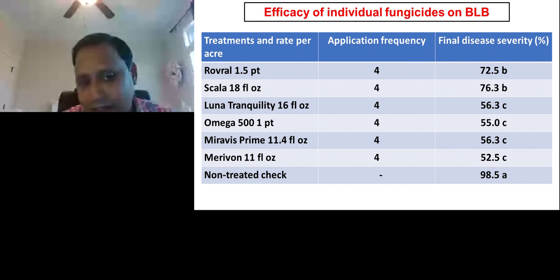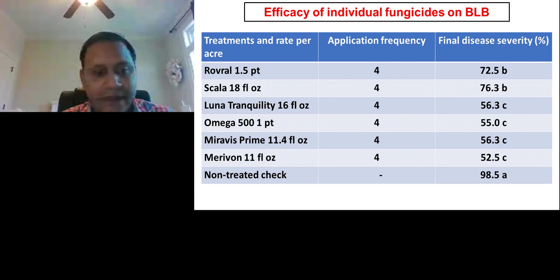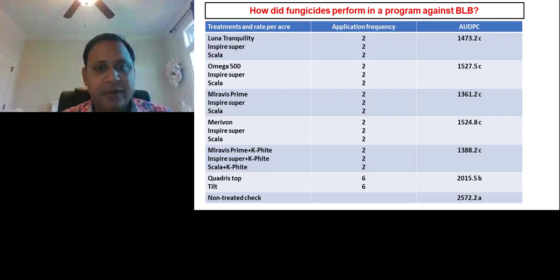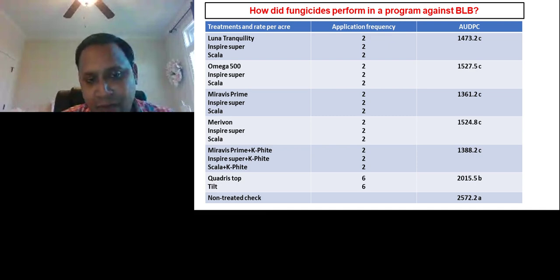What we are recommending is that if you have a fungicide program where you rotate with Lunar Tranquility, Omega 500, Inspire Super, Miravis Prime, and Manzate, it will cover your base. With respect to different fungicides in different combinations in a program, we tested nearly six different programs comprising different combinations of Lunar Tranquility, Inspire Super, Scala, Omega 500, Miravis Prime, Quadris Top, and Tilt.